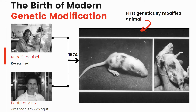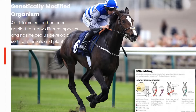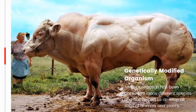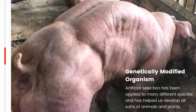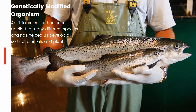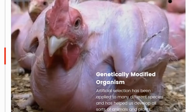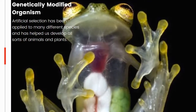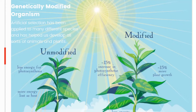To this day, artificial selection has been applied to many different species and has helped us develop all sorts of animals and plants — from prize-winning racehorses to muscular beef cattle, super-muscled pigs, fast-growing salmon, featherless chickens, see-through frogs, and crops with better yields, among many more genetically modified organisms.